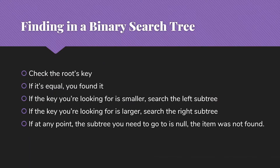The first operation we want to be able to do in our search tree is to find things. The basic approach is to check the root's key — if it's equal to the thing I'm looking for, then I found it. If I'm looking for something smaller than the root, I head left and search the left subtree. If I'm looking for something larger than the root's key, I search the right subtree. If at any point I need to go to a subtree that doesn't exist — an empty subtree — then we did not find the item.